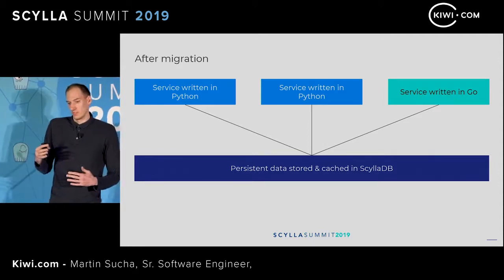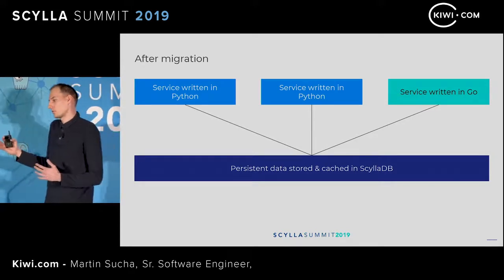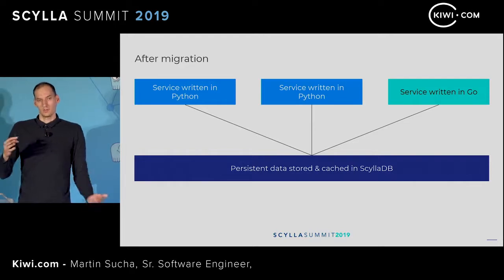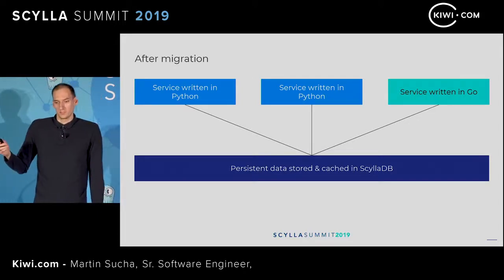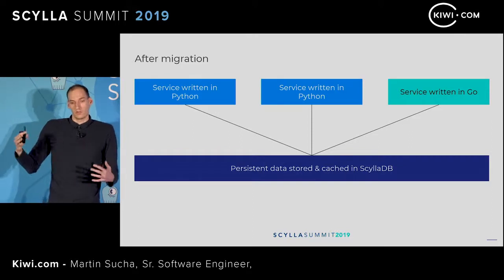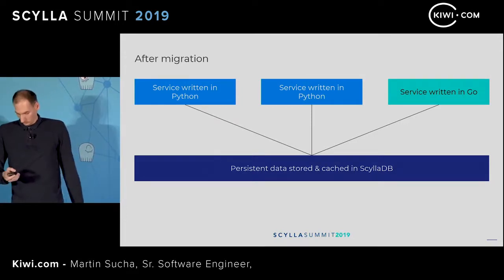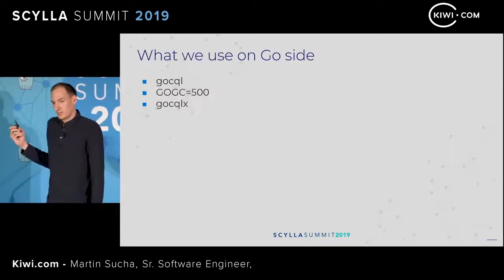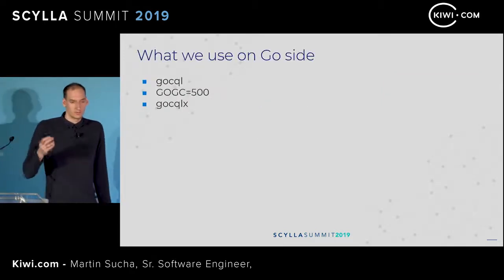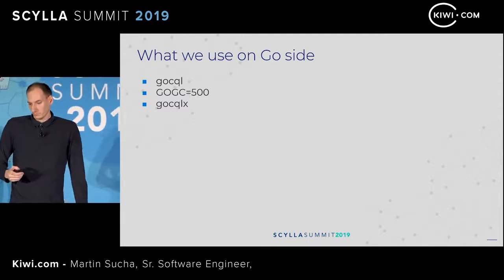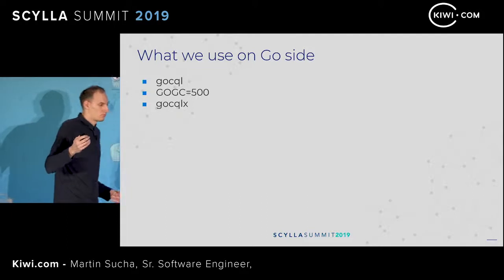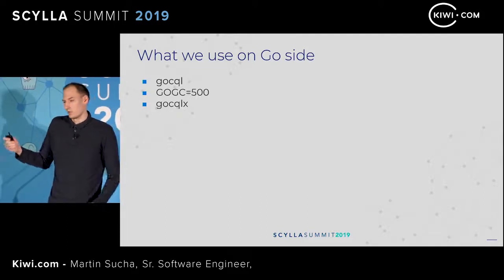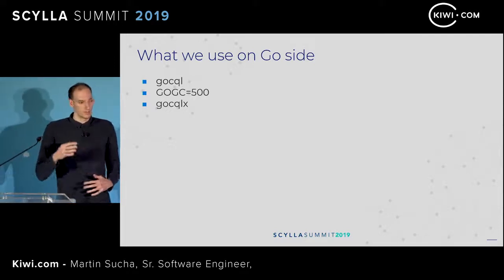We can also reduce the amount of data cached in memory. With Python we had a lot of workers and cached data from other microservices. Having Go means we have just a single or a few instances of our service per machine. Our setup is pretty standard — we use GoCQL to access the cluster. We started with the Scylla driver, and later we forked it because we needed to make some changes: bug fixes and some small features.